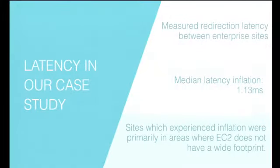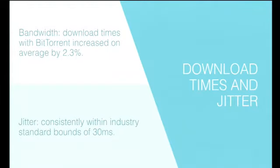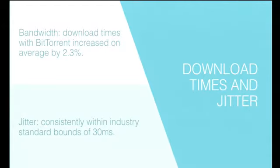We also looked at a multinational enterprise rather than just universities, and we saw a median latency penalty of about one millisecond between sites. Those sites that did experience inflation were places where EC2 does not have many data centers, such as branches in East Asia or South America. Latency isn't the only metric — we also looked at download times, which increased by about 2.3%. We looked at jitter, which measures the glitchiness of a connection. The results tell us that packets were coming through smoothly, so we can expect Skype calls and videos to come through smoothly as well.